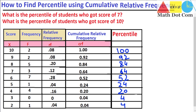Now let's move to the questions. What is the percentile of the students who got a score of 7? It means we have to find the percentage of students who fall below the score of 7. So here, this is the score 7, and 3 students got the score of 7 — the frequency is 3. You have to check the percentage of students who got a score less than 7. For that, you have to move to the row below this, and when we move to that row, the percentile value is 52.